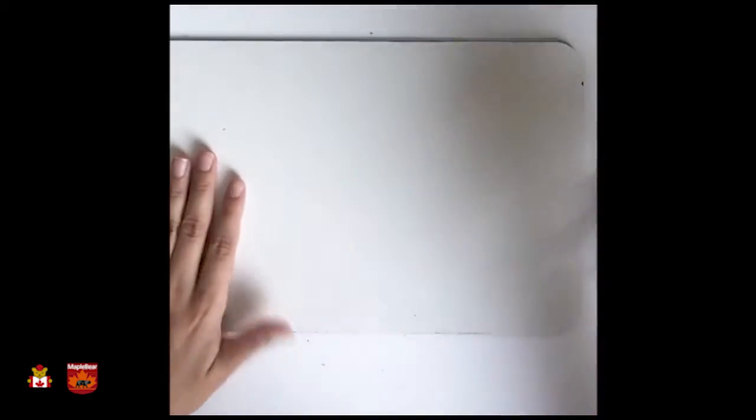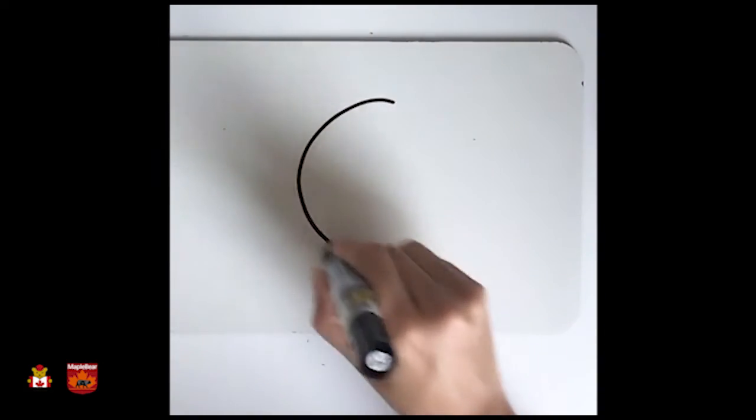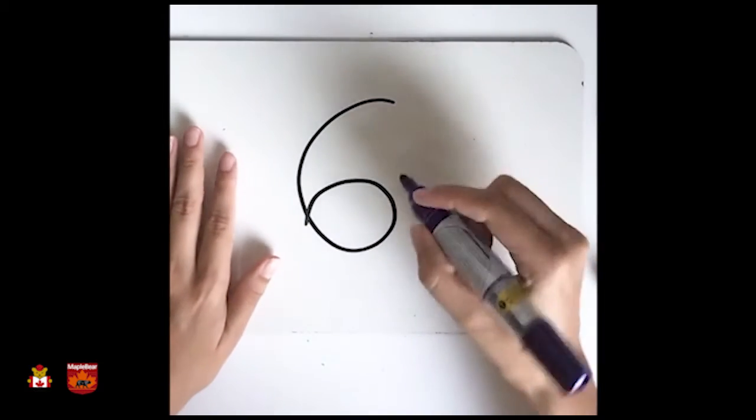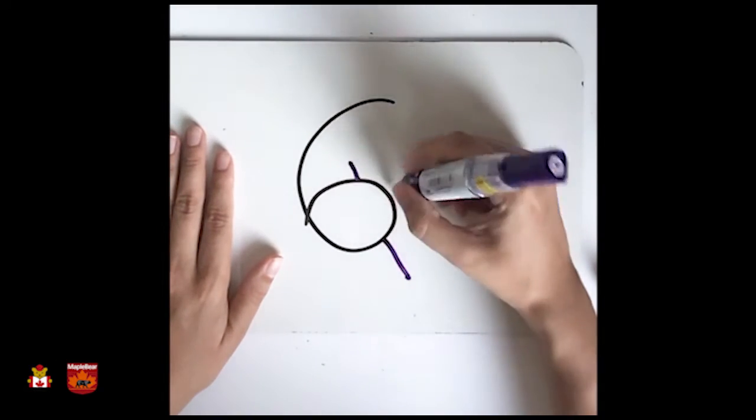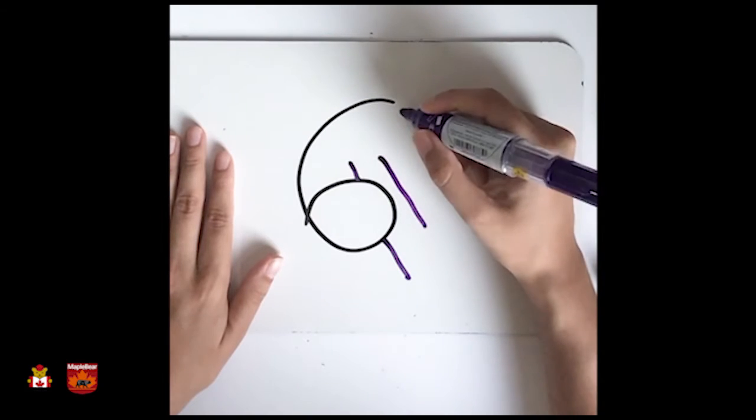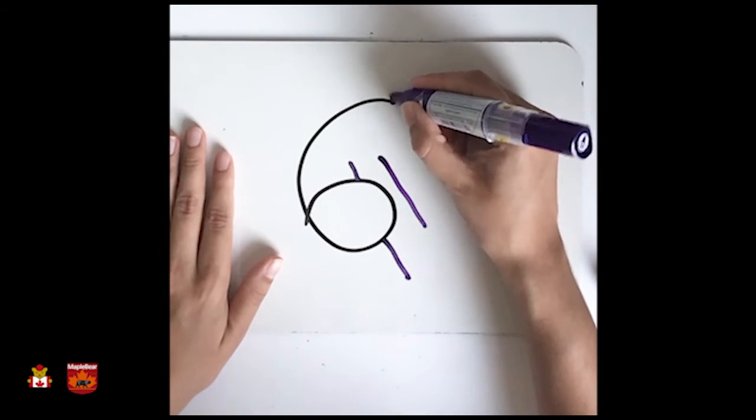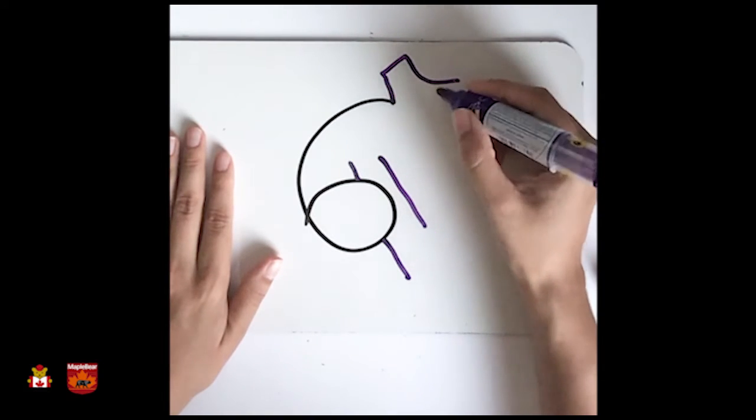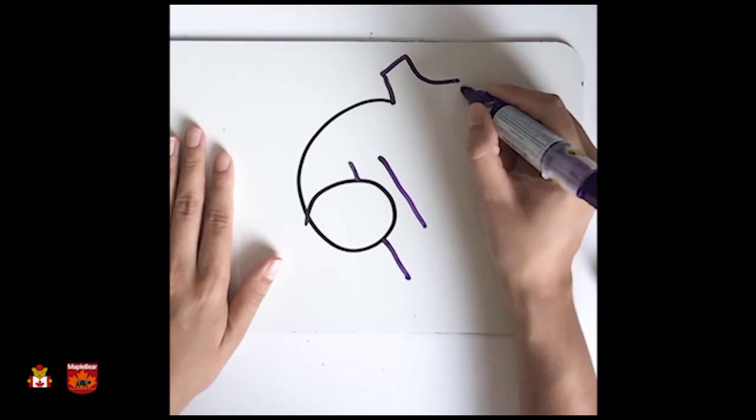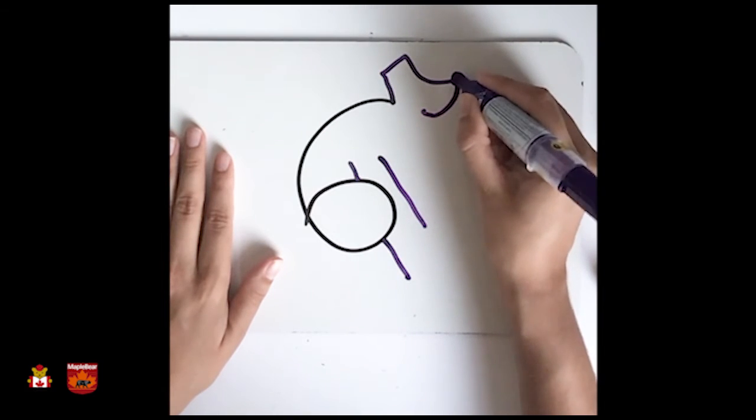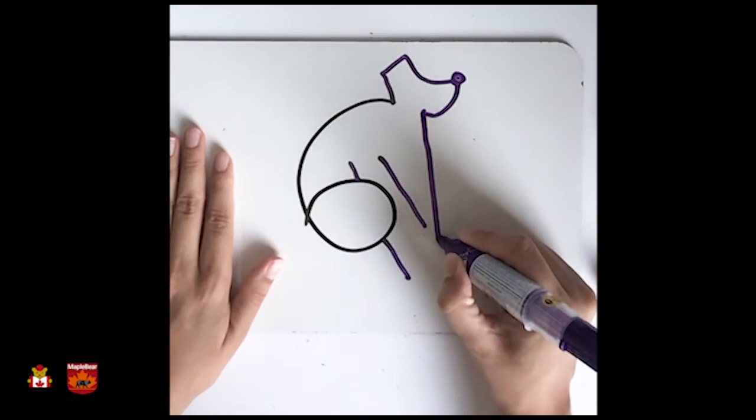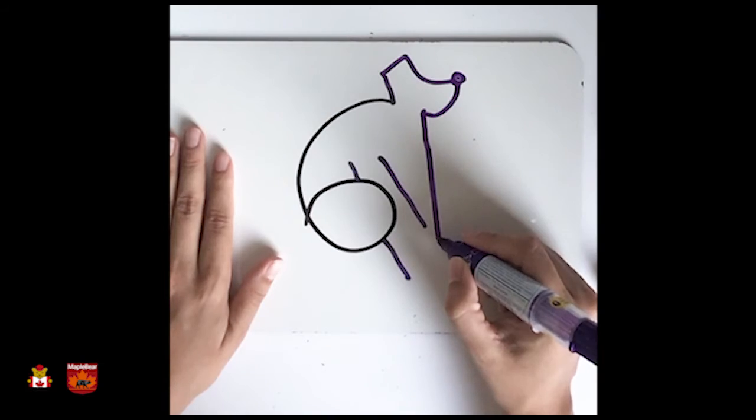Okay. Number six. First, you trace the number six. And you do like these. Like these. Can you guess? Oh, this one is really, really cute. I think everybody is going to like it.